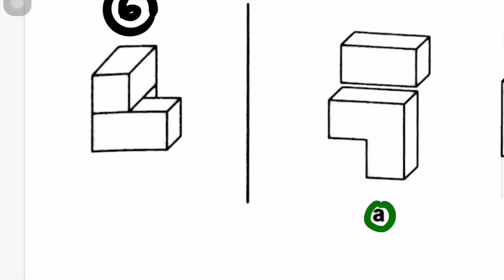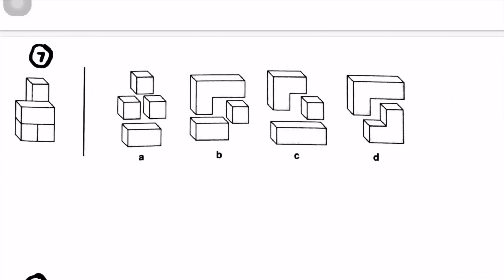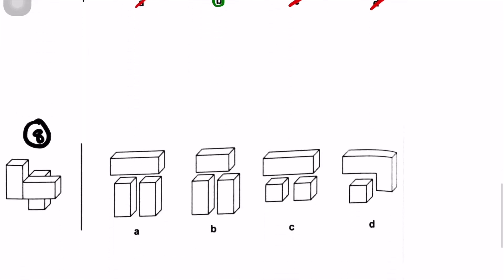Question number seven: I can see a cuboid, so I'm going to eliminate anything with a larger cuboid. I eliminate D, A, and C because the cuboid shown is much smaller than the ones in those choices. It must be B. To confirm: the L-shaped piece is this shape coming down, this bit of the shape is at the top, and the cuboid goes right here with the cube right there. So the answer is B.